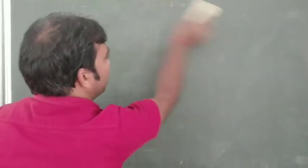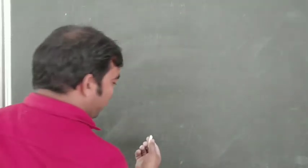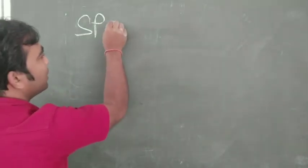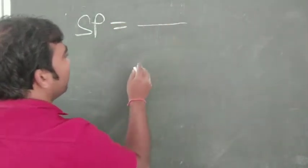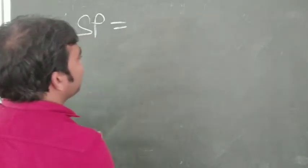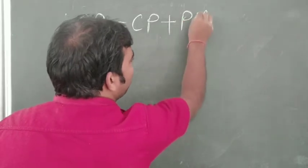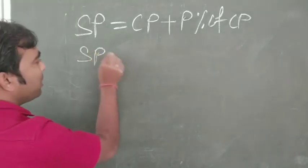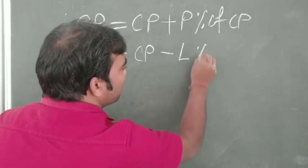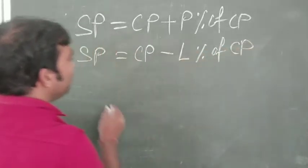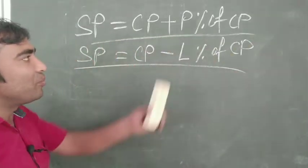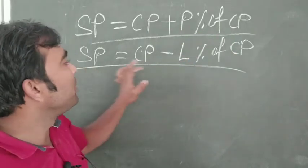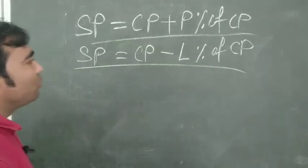To find out SP, if we know the profit percentage and CP: SP equals CP plus profit percentage of CP. Similarly, in case of loss: SP equals CP minus loss percentage of CP. In case of profit it will be plus, and in case of loss it will be minus. That is how we get SP.